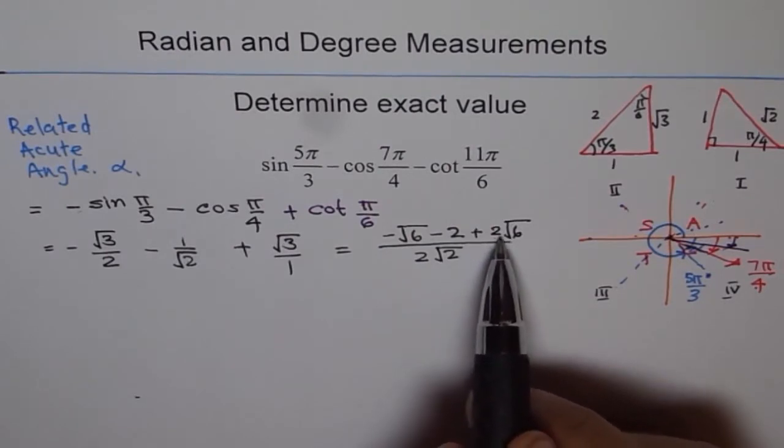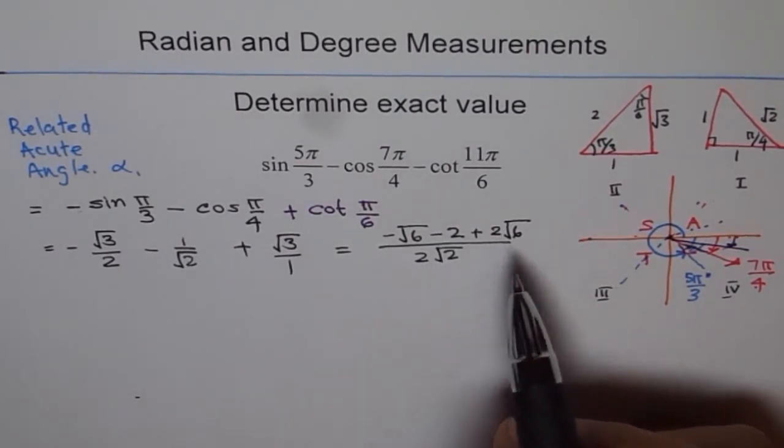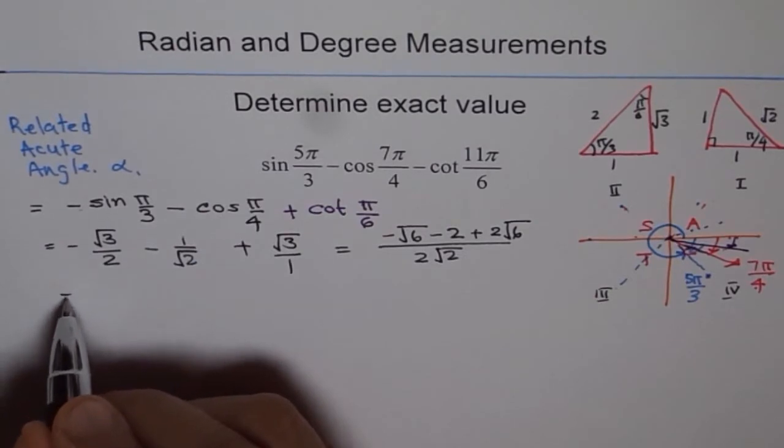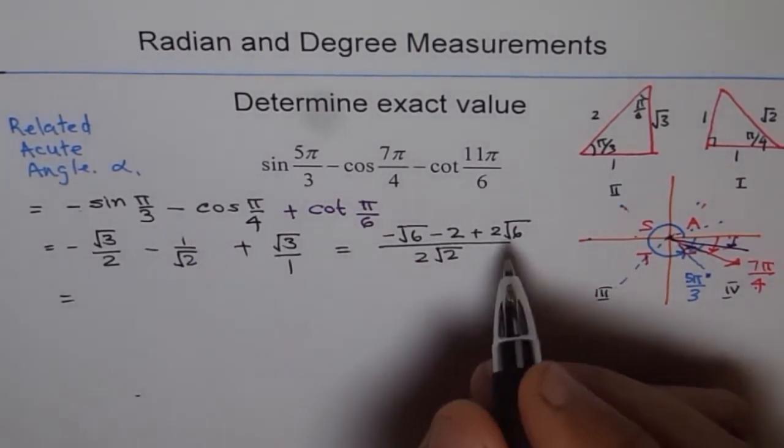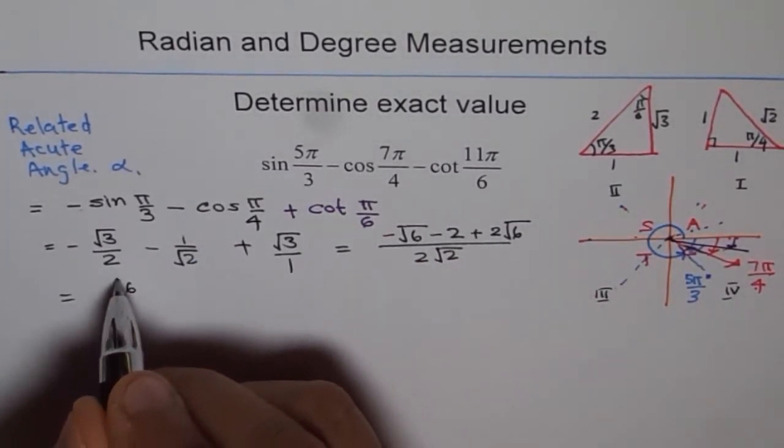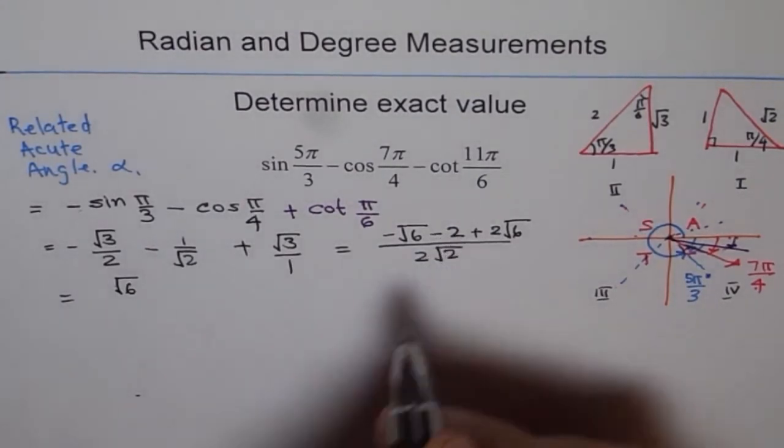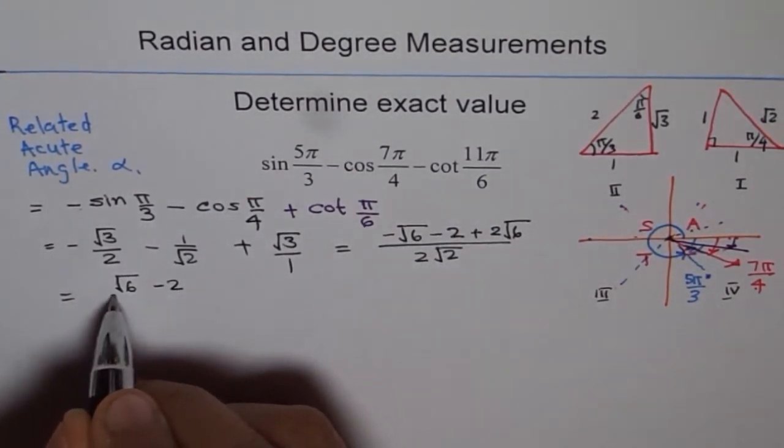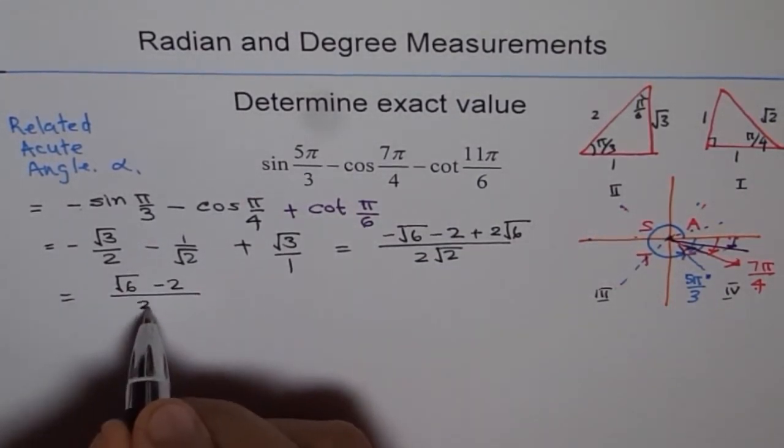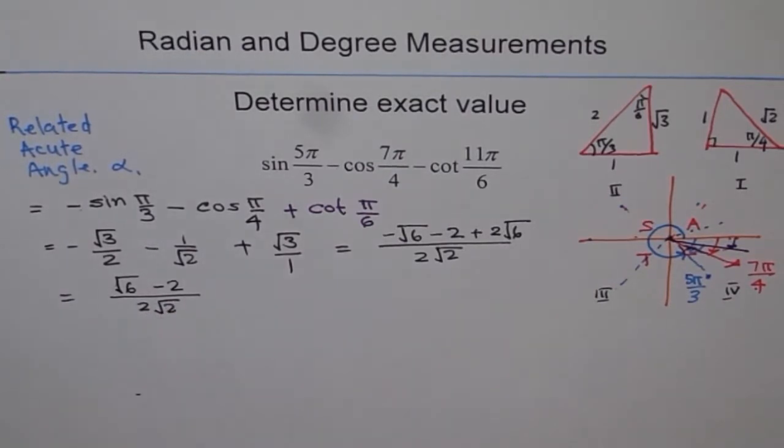Now, 2 times square root 6 minus square root 6 gives me 1 square root 6. So I can simplify it a bit. So we get square root 6 minus 2 divided by 2 square root 2. So that is kind of my answer.